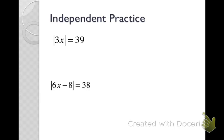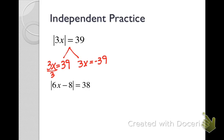Now for some independent practice — go ahead and pause your video, try these two on your own, then restart to see me do them. The absolute value is alone, so we split it up: three x equals thirty-nine, and three x equals negative thirty-nine. Dividing both sides by three gives x equals thirteen and x equals negative thirteen.